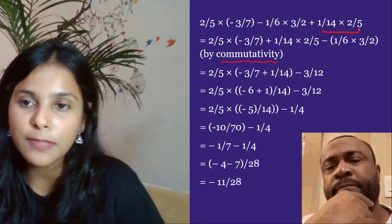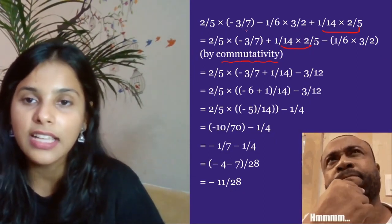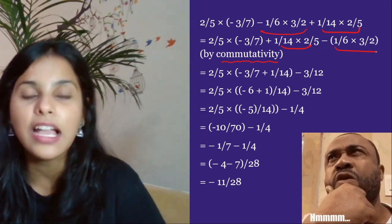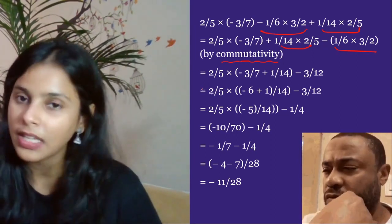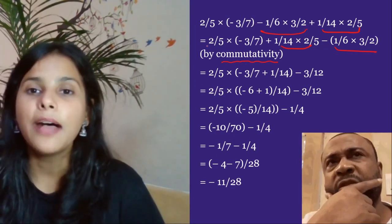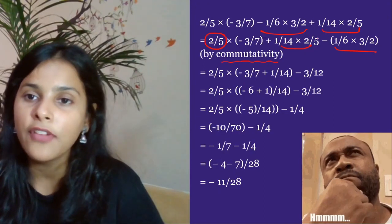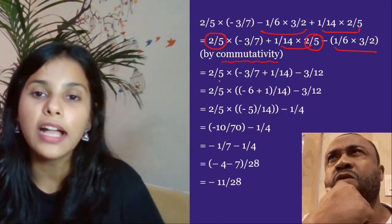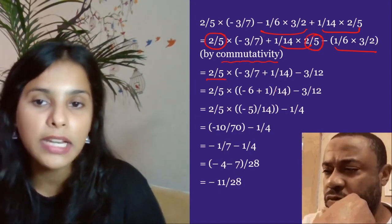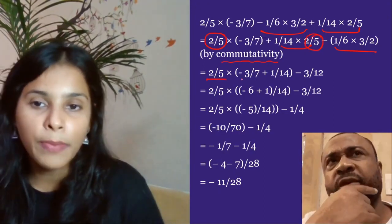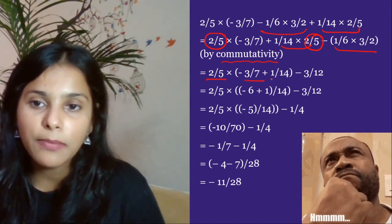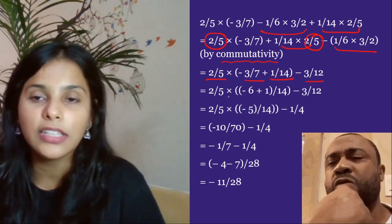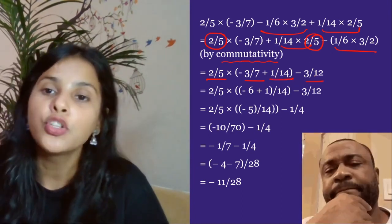Put this pair here and put it here. Now we will take these two terms and take out the common. So what is left? Minus 3/7 plus 1/14 minus 3/12.